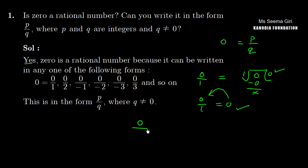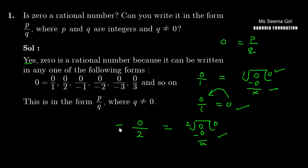Let's take another example: 0 upon 2, that is 0 divided by 2. 2 zeros are 0. This division might seem unusual, but this is the truth. So 0 upon 2 also gives answer 0. Therefore, 0 can be written in the form of P upon Q.